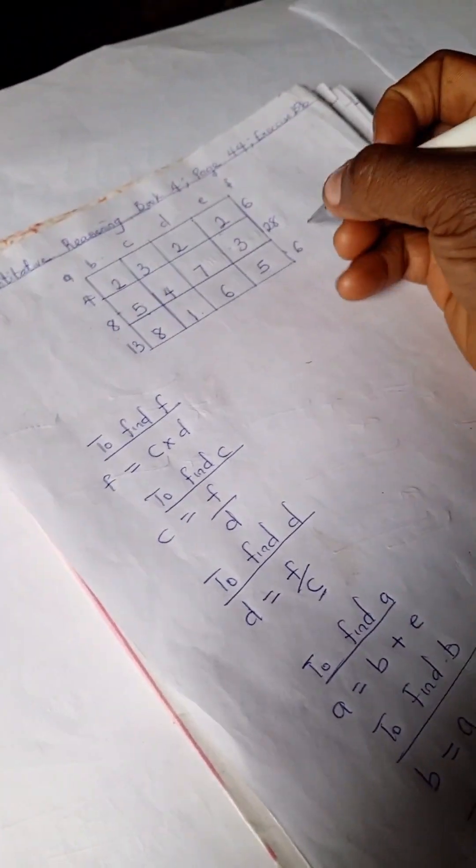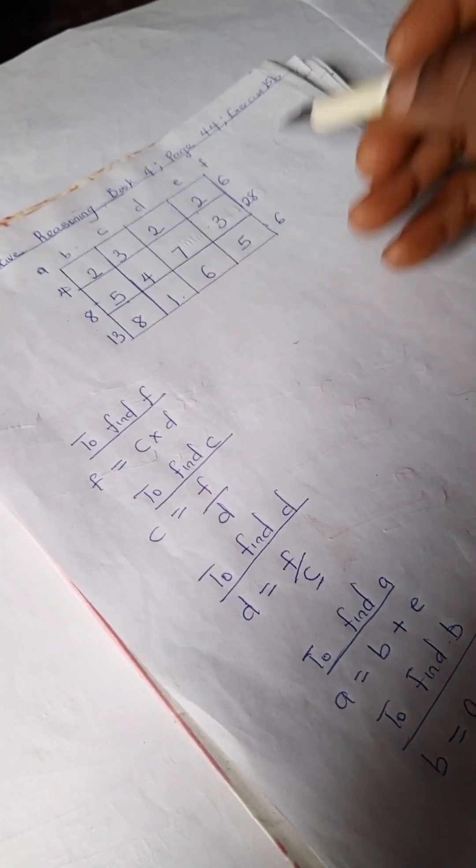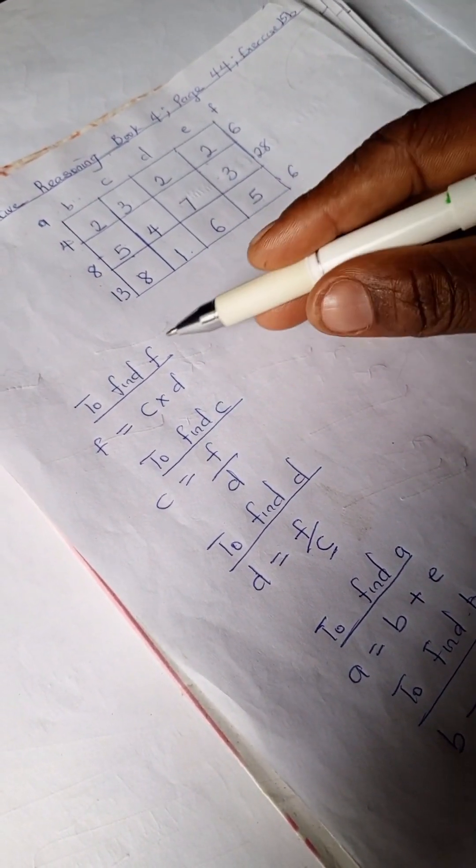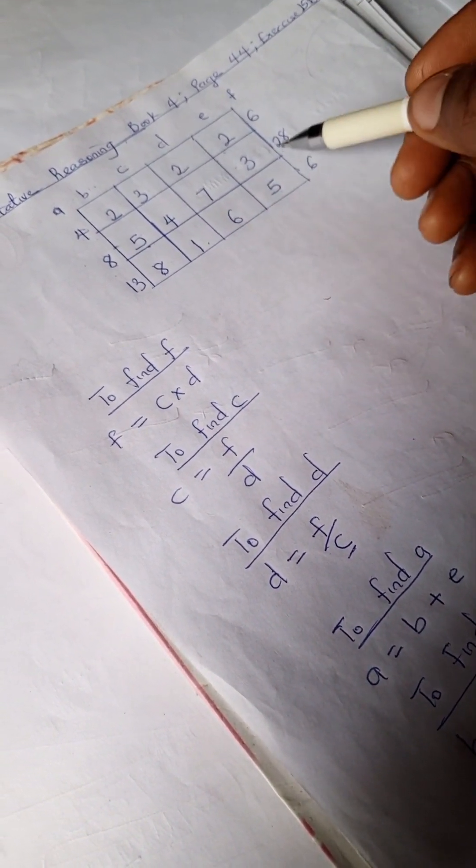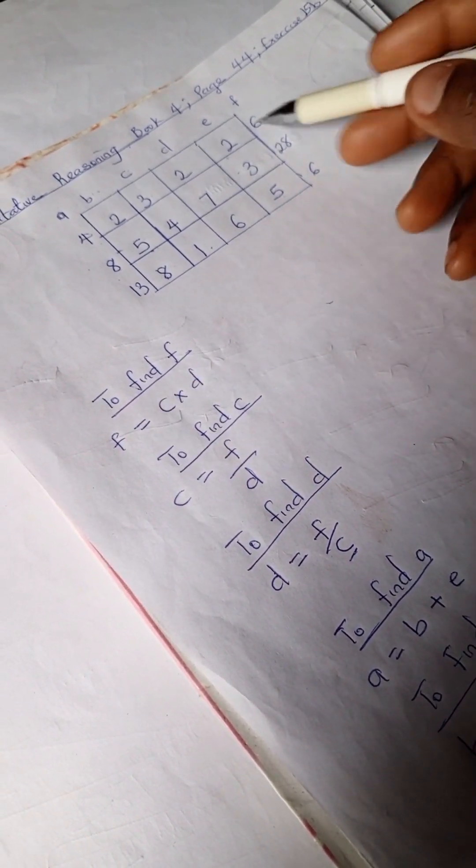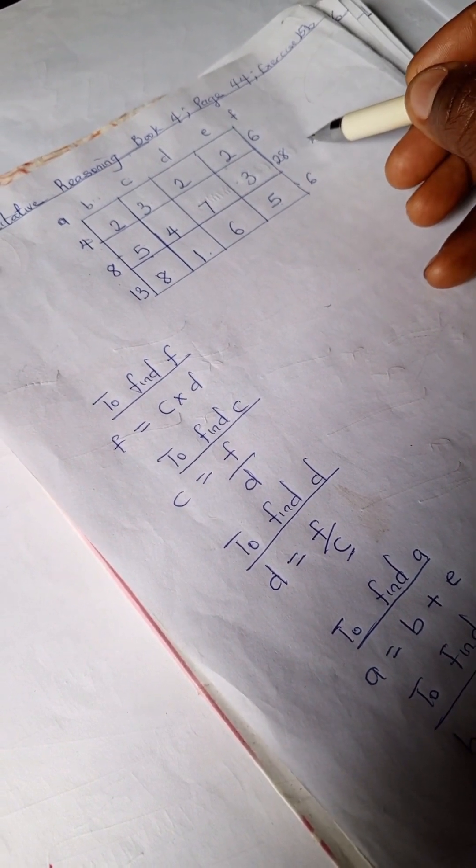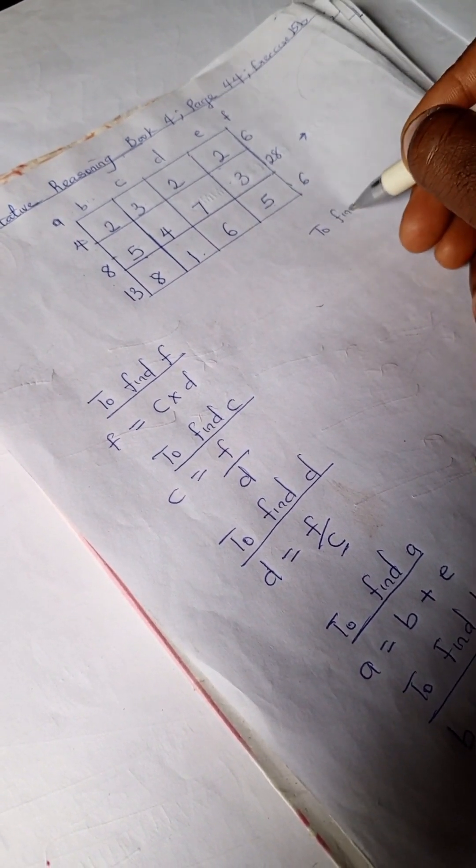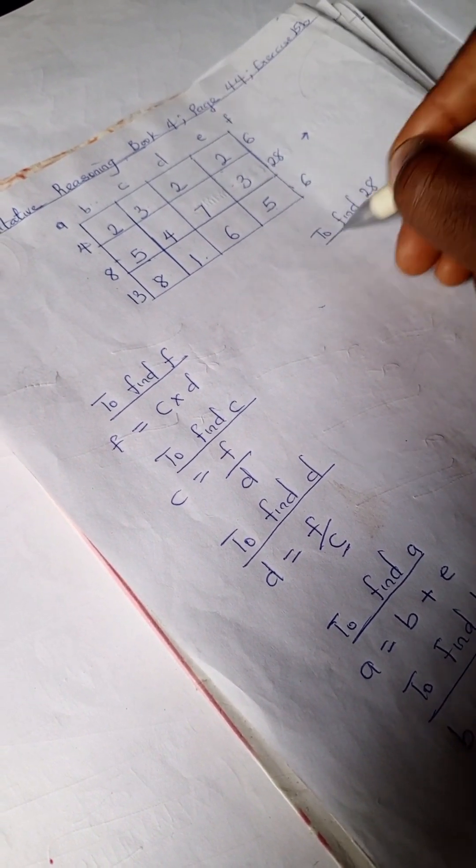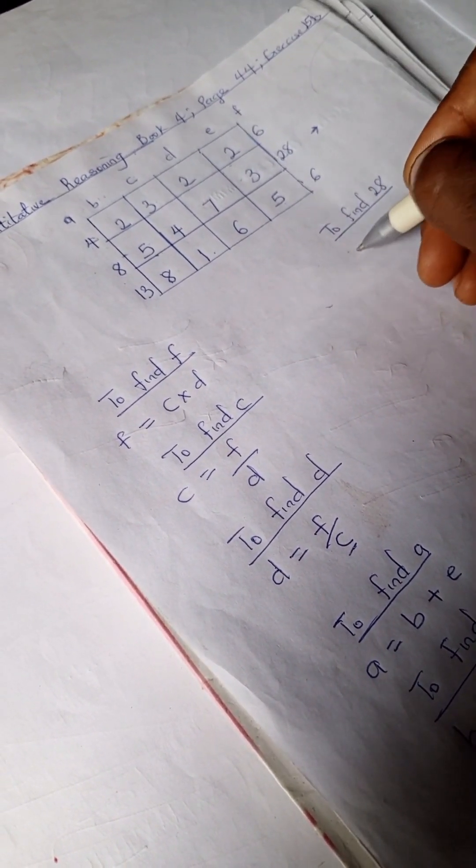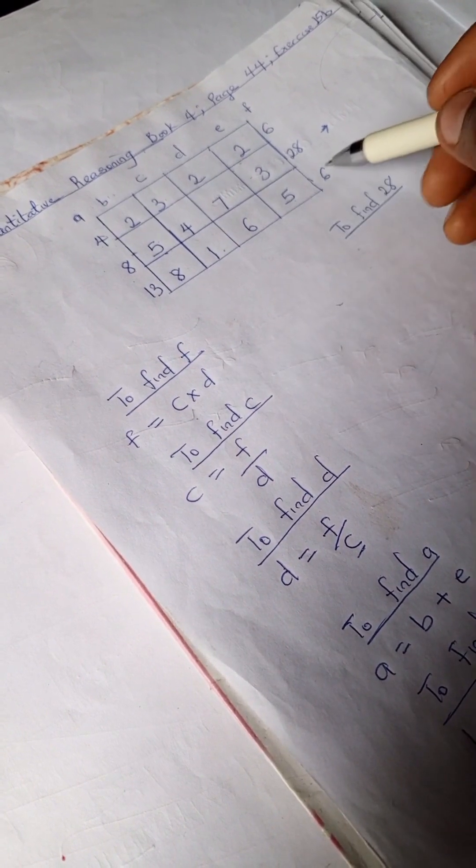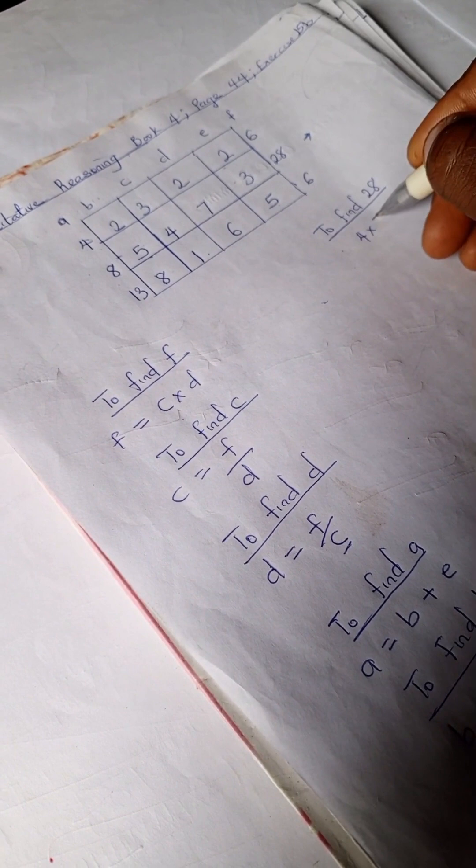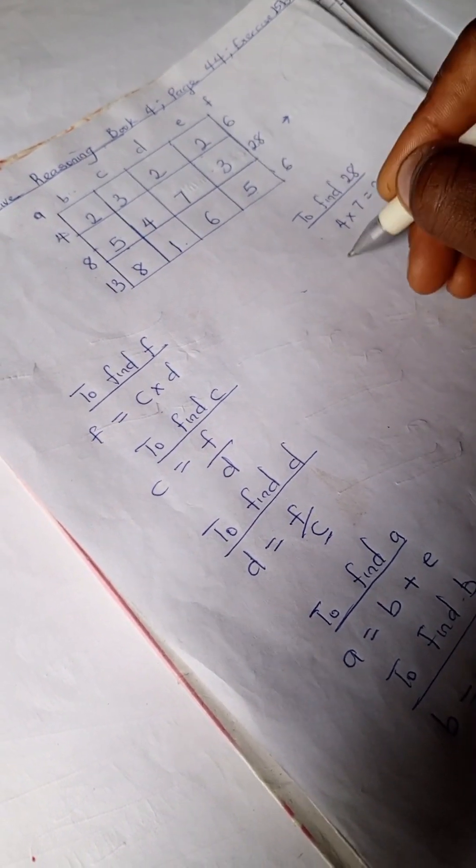So we can try out one of the examples. So let's look at this row and apply what we have done. Okay, so these are F, right? So let's find this row. To find our 28, right, so we have C times D. These are C times D. So 4 times 7 is 28. So as you can see, it's correct.